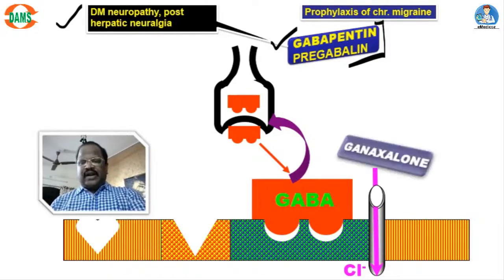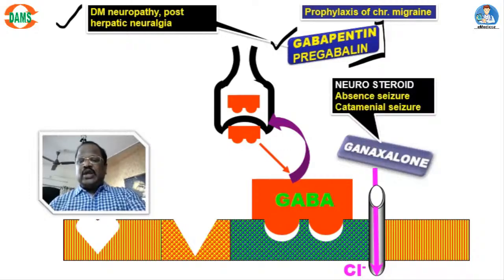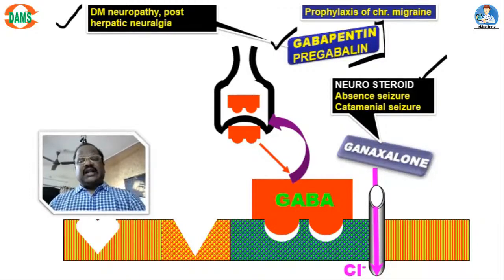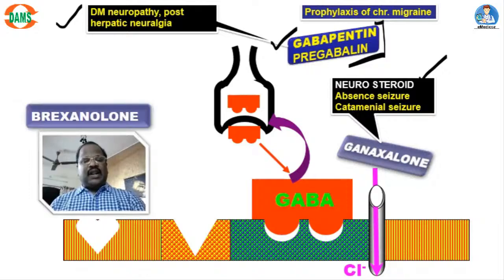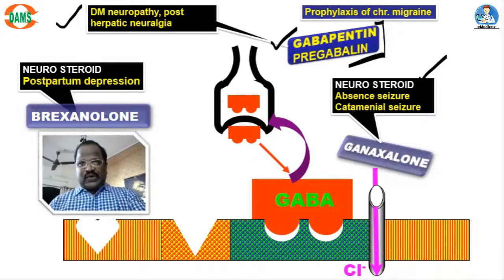Two more important GABA drugs to recall: Ganaxolone — actually a GABA analogue and a neurosteroid — is useful for absence seizure and for catamenial seizure. And the latest addition: we have one more GABA analogue called Brexanolone. Brexanolone is a newer GABA agonist and also a neurosteroid, approved for treatment of postpartum depression. So Brexanolone, a newer GABA agonist, is useful for treatment of postpartum depression.